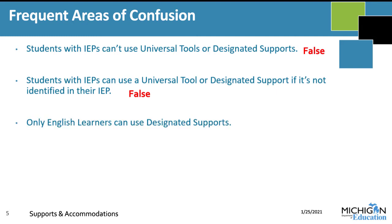Here's another one: only English learners can use designated supports. This is also a false statement. The category of designated supports is open for any student, as long as an educator or group of educators has made a decision that the student needs that support. A student does not have to be formally identified as an English learner or a student with disabilities to use one of these supports.